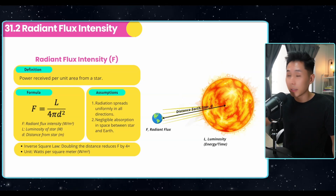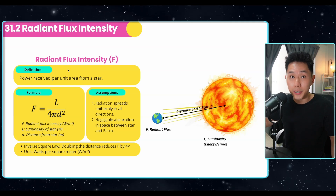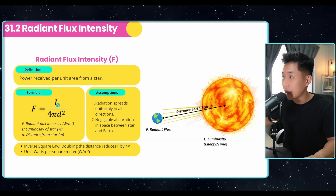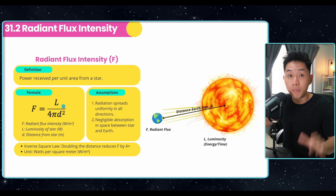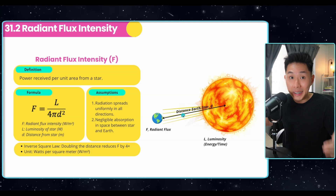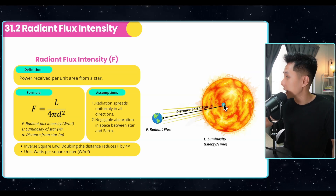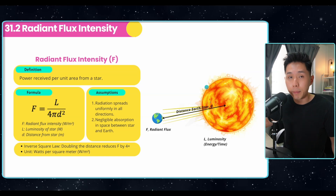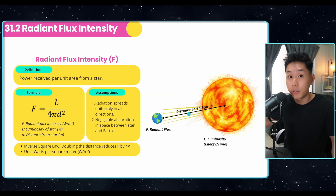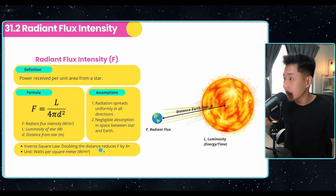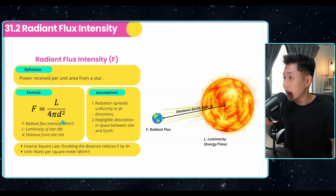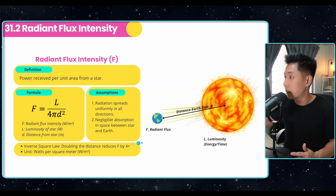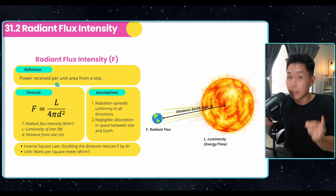Now it's time to get into calculation. The first term to calculate is radiant flux intensity — it is the power received per unit area from a star. To calculate it, we use the formula F = L / 4πd², where d is the distance from the star. Note that 4πd² is the surface area of a sphere, and the assumption is that radiation spreads uniformly in all directions. Doubling the distance, according to the inverse square law, reduces F by 4 times, which is why further stars appear very dim. The unit is watts per square metre.